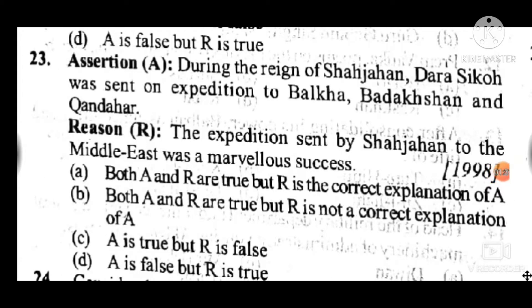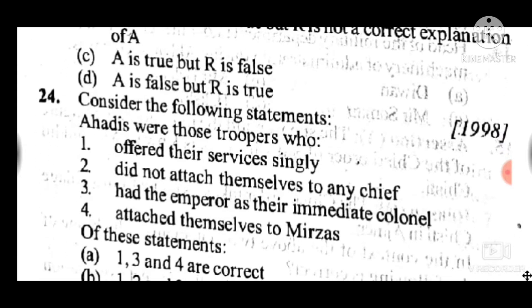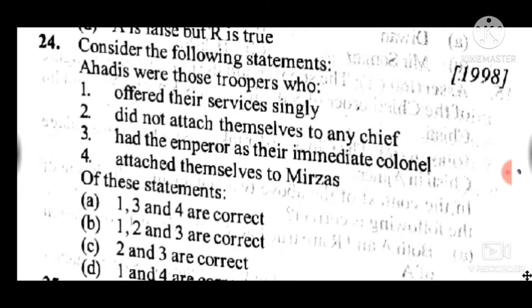Question 23 assertion: During the reign of Shah Jahan, Dara Shukoh was sent on an expedition to Balkh, Badakhshan and Kandahar region. Reason: the expedition sent by Shah Jahan to the Middle East was a marvelous success. Answer to question 23 is C: A is true but R is false. Question 24: These were troopers who offered their service singly — answer to question 24 is B: statements 1, 2 and 3 are correct.